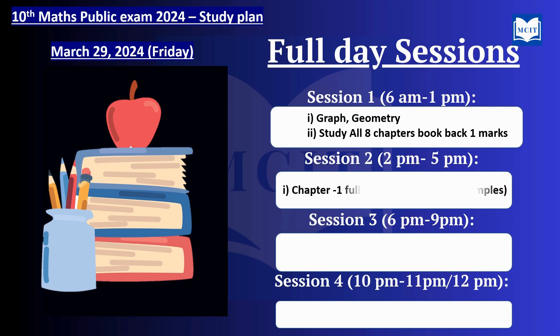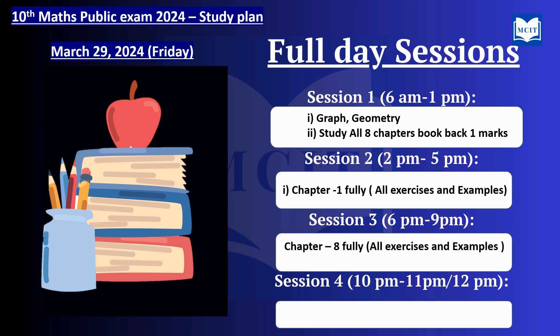In session 2, from afternoon 2 to 5, you will learn chapter 1 — all exercise sums and example sums. Chapter 1 is very easy. In session 3, from 6 to 9, you will learn chapter 8, which is very easy to score. That covers statistics. At night, session 4, you will learn chapter 2.